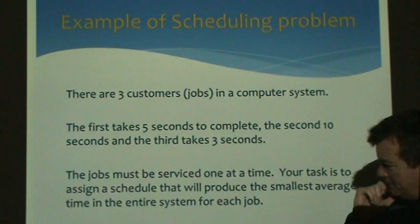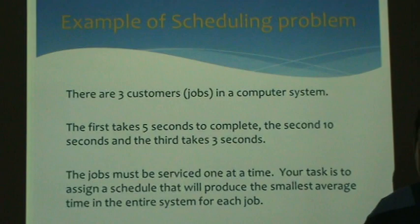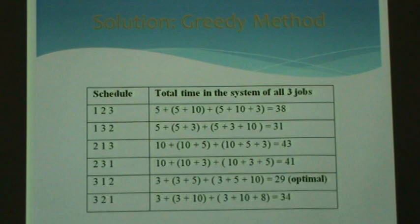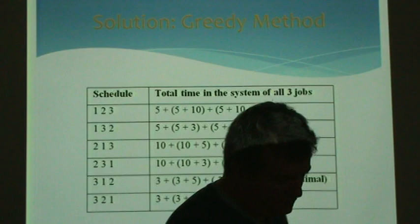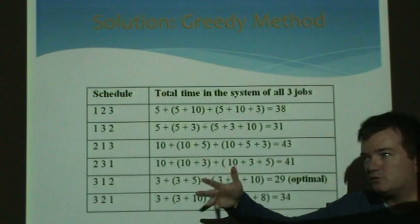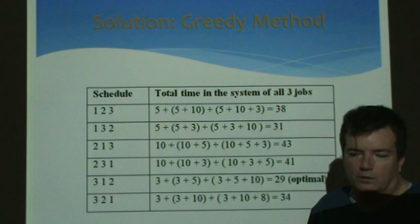Our goal is to minimize the average amount of time a job spends in the system. Hopefully the answer hit you right away: let the shortest job go first, then the second shortest, then the third. That's the idea behind the express line at the supermarket — six items or less, twelve items or less — they're basically trying to get the quickest processes out the door first.